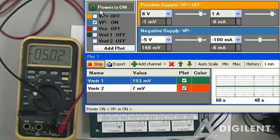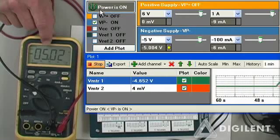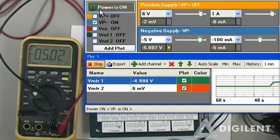Click power on. I'm getting minus 5.02 volts on my DMM. I'm also getting a similar amount, minus 4.999 volts here on Vmeter 1.